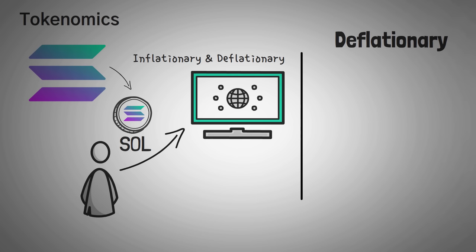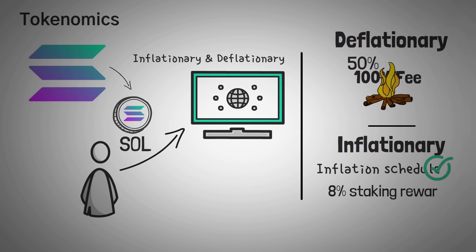It is deflationary because for a long time, 100% of all transaction fees were burned, and now it is around 50% that are burned. But it is also inflationary because they recently approved an inflation schedule where staking rewards are paying out around 8%,